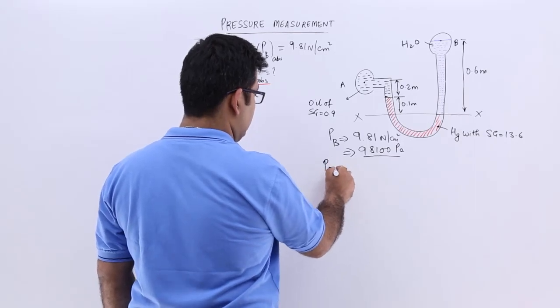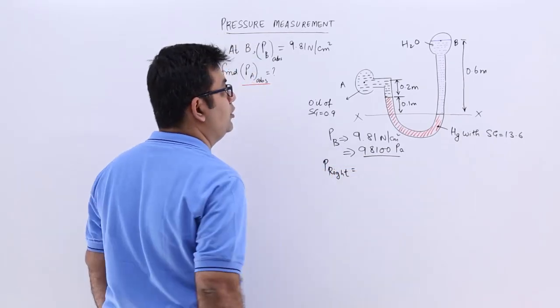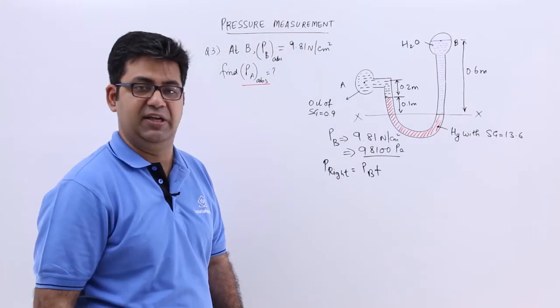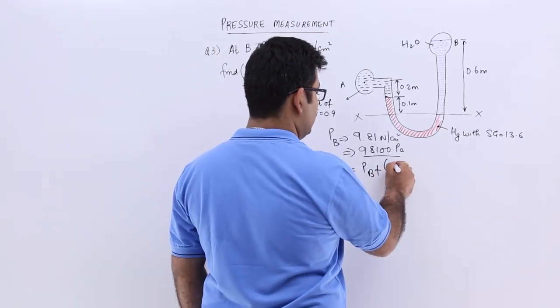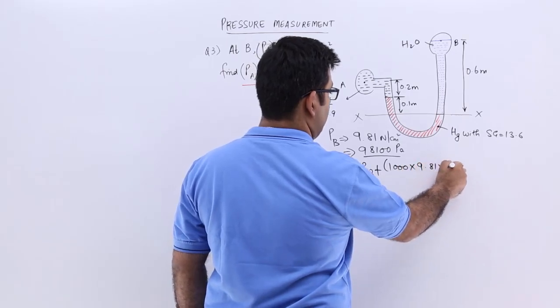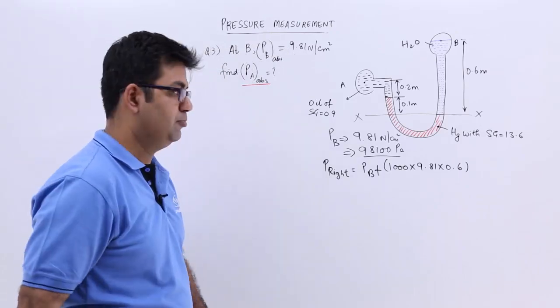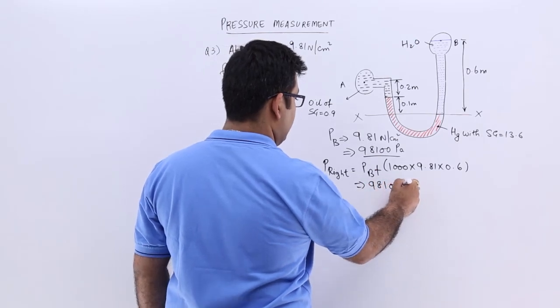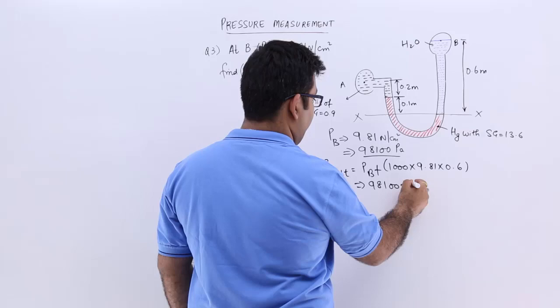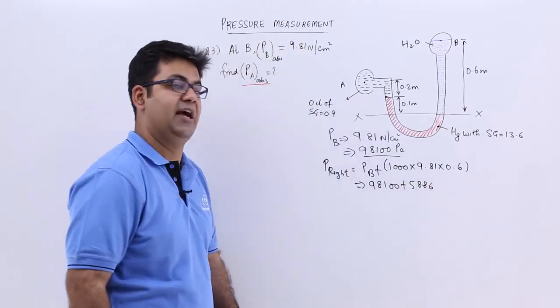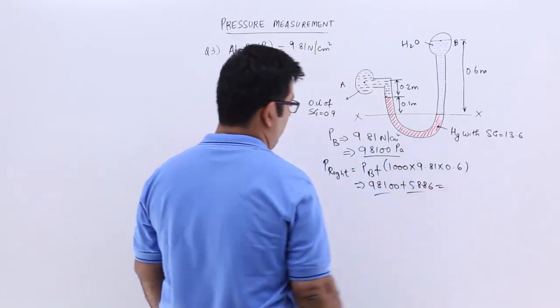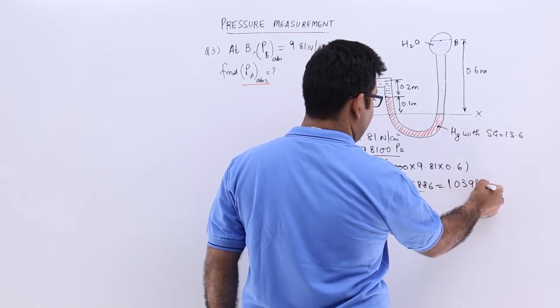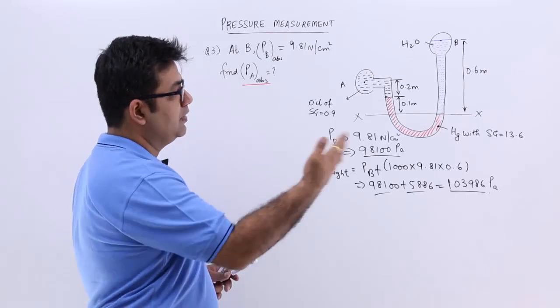So you will get P right. This is equal to, yes you need to write down PB plus the pressure due to this liquid column of height 0.6 which is of water. So you will get 1000 into 9.81 into 0.6. So PB is already known to us. So it is 98100 plus this would be around 5800 to be exact 5886. So when you add these two, you get a value in the right limb in Pascal which will be 103986.